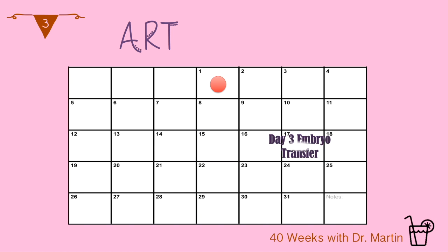If you had a day 3 embryo transfer, you would take the transfer date plus 263 days. If you had a day 5 embryo transfer, you would add 261 days to the embryo placement date.